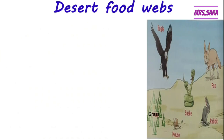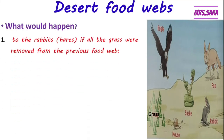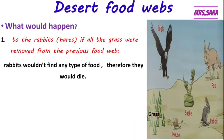You can see here the desert food web, Primary 5— eagle, fox, snake, rabbit, mouse, and grass. What would happen to the rabbits if all the grass were removed? If there is no grass or plants in the desert, the mouse and rabbit can't find their food. So if they couldn't find any grasses, they would die or move to another place searching for food.